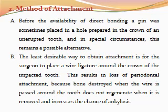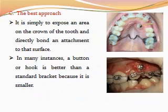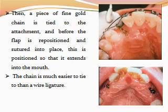Method of attachment: before availability of direct bonding, a bone pin was sometimes placed in a hole prepared in the crown of the unerupted tooth, but this method is not used now. The least desirable way to obtain attachment is for the surgeon to place a wire ligature around the crown of the impacted tooth, as this results in loss of periodontal attachment because bone destroyed when the wire is passed around the tooth does not regenerate when removed, and it increases the chance of ankylosis. The best approach is simply to expose an area on the crown of the tooth and directly bond an attachment to the surface. A button or hook is better than a standard bracket because it is smaller. Then a piece of fine gold chain is tied to the attachment, and before the flap is repositioned and sutured, the chain is positioned so that it extends into the mouth.